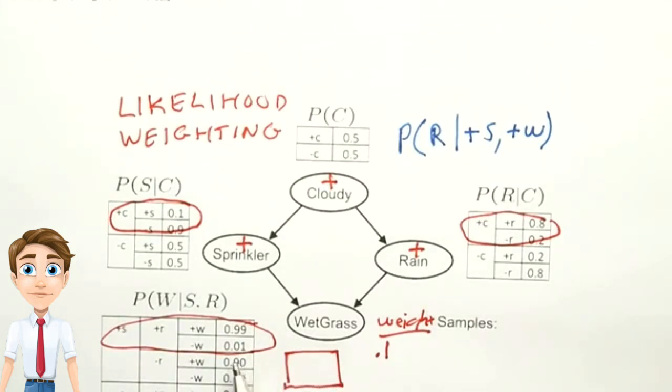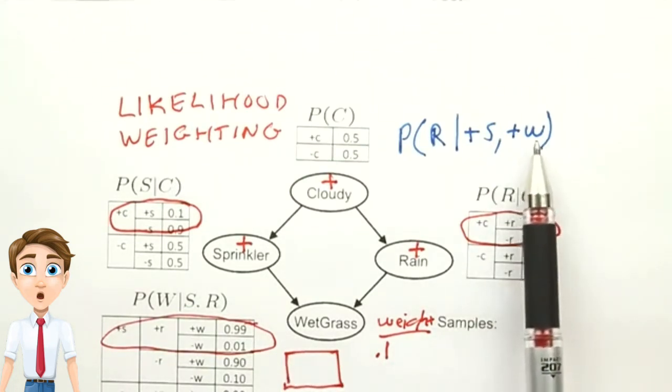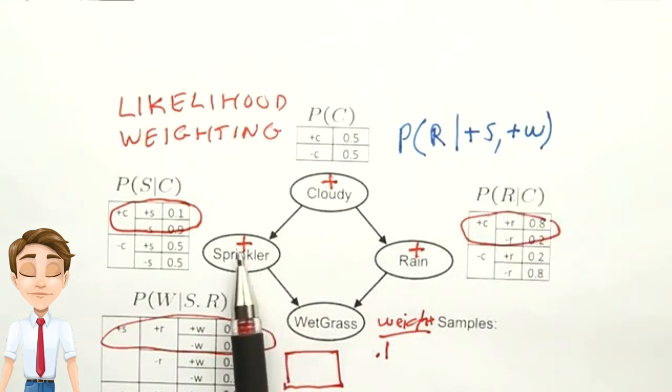The answer is, we're looking for the probability of having a positive w given a positive s and a positive r, so that's in this row, so it's 0.99.